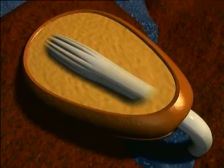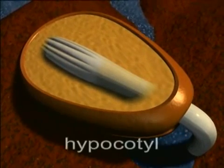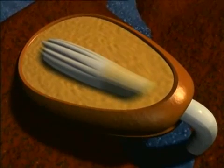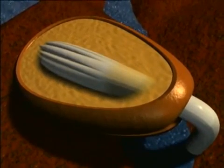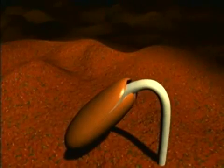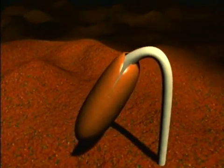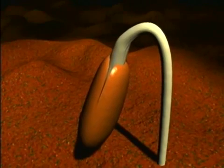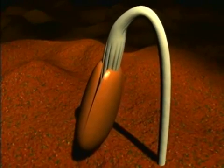Soon, the stem axis below the cotyledons, known as the hypocotyl, begins to elongate. Continued hypocotyl elongation lifts the cotyledons out of the soil.